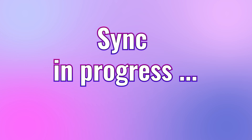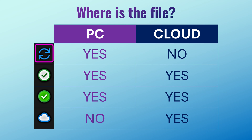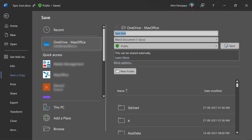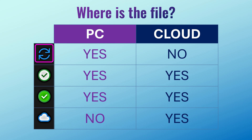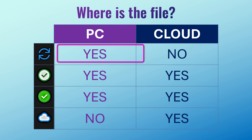The first one is the syncing icon. I created a file and stored it on OneDrive, but first it gets stored on my local PC and then it is synchronizing with the cloud. That is what the syncing icon is indicating.